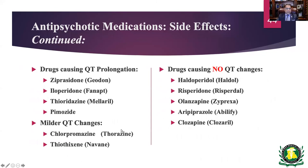Certain medications cause QT prolongation — do a baseline EKG and repeat every 6 to 12 months for newer agents. Medications considered relatively safe from a cardiotoxic standpoint include haloperidol, risperidone, olanzapine, vilazodone, and quetiapine.